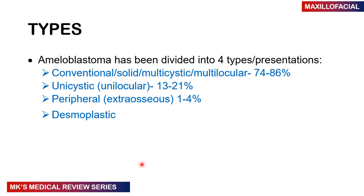There are four predominant types. The most common is the conventional type, also called solid, multicystic, or multilocular, accounting for about 74 to 86% of cases. The next is the unicystic or unilocular type, accounting for about 13 to 21%. Then you have the peripheral or extra-osseous type, arising outside bone. And finally, the desmoplastic type.